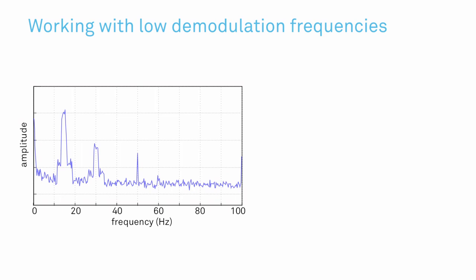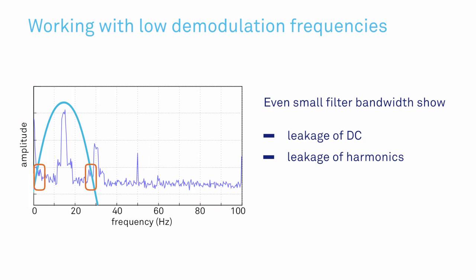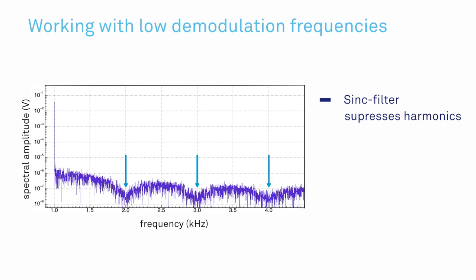Care should also be taken when working with low demodulation frequencies. In this case, even relatively small filter bandwidths may lead to leakage of the DC and the harmonics, because they are not sufficiently suppressed. In order to keep this in check, higher order filters may be required.